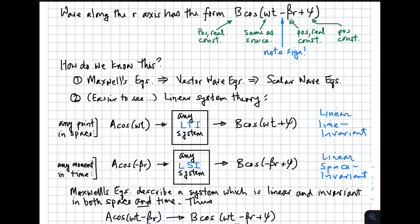The wave along the r, that is distance axis, has the form b, which is a real positive constant, and then a cosine function. That cosine function has a time dependence in it, omega t. It has a distance dependence on it, beta times r. We'll get to beta here in a moment. And then there could be an additional positive constant, the variable psi here, and that's what we refer to typically as the phase. So the argument of cosine has a time dependence, a distance dependence, and then an additional phase.